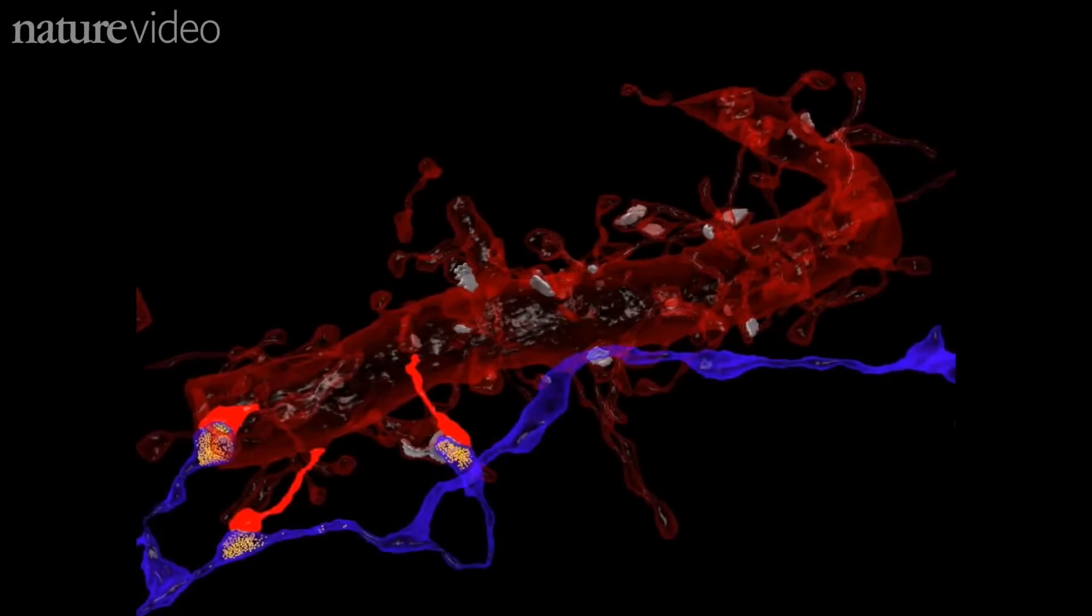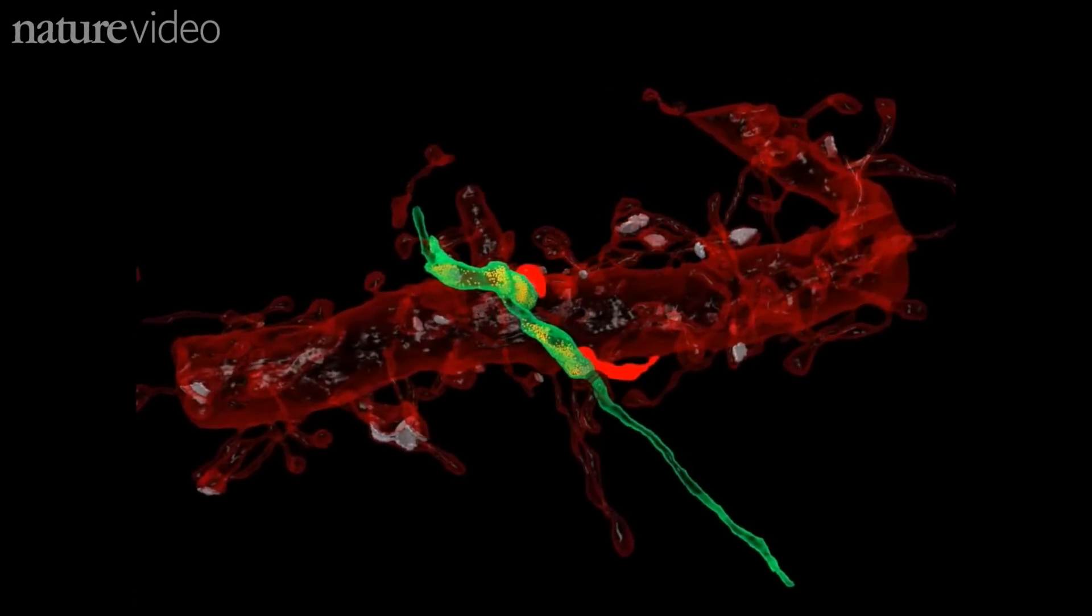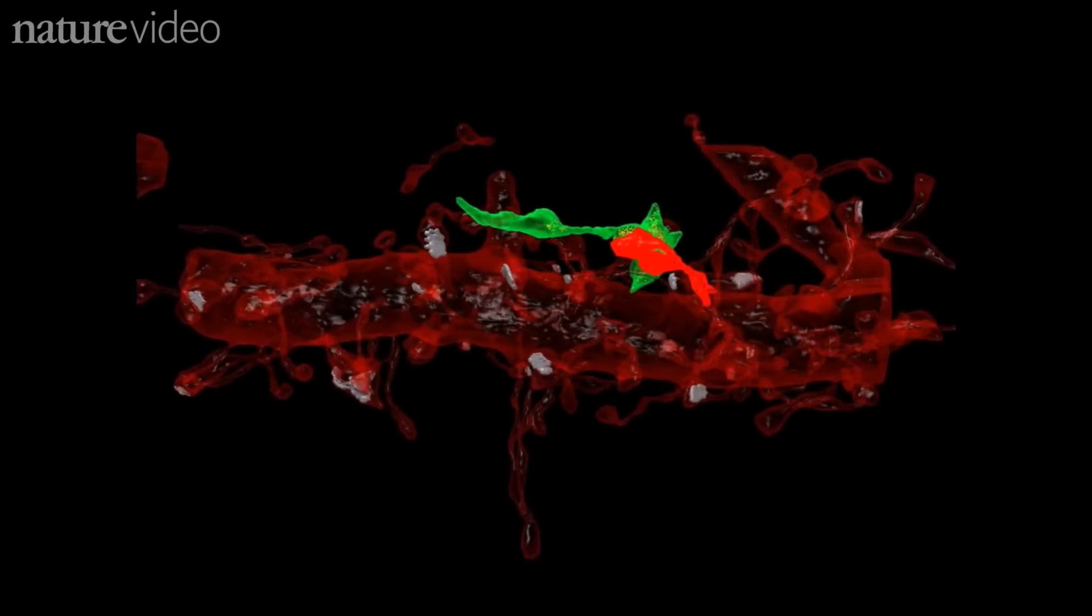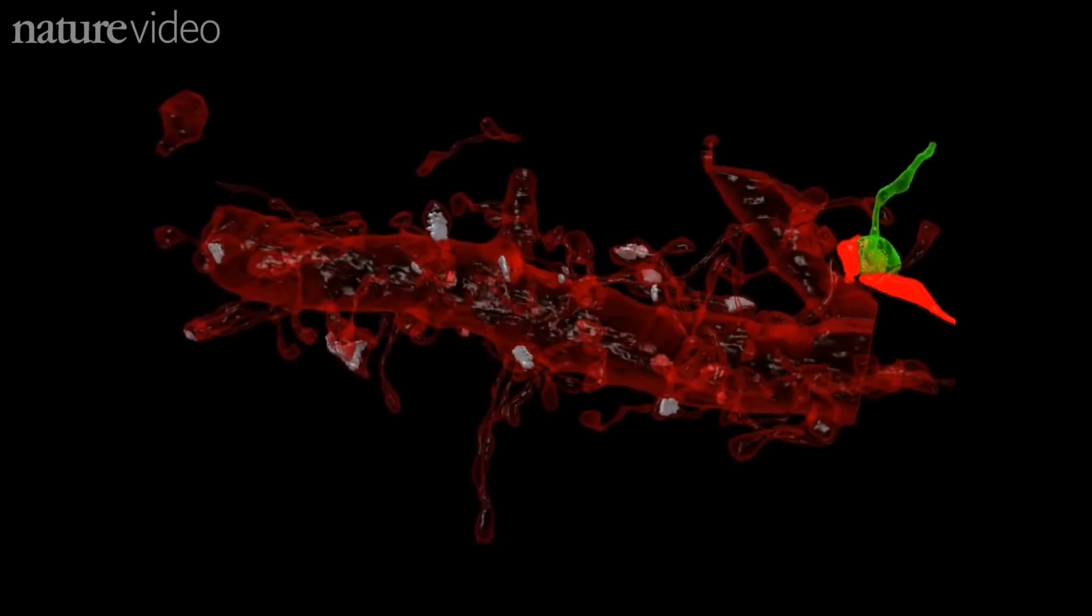This tiny tissue sample is teaching scientists some principles of brain mechanics. Neuroscientists often assume that neurons that are neighbours are likely to connect more than distant ones. But the team were surprised to find that this pattern didn't hold.